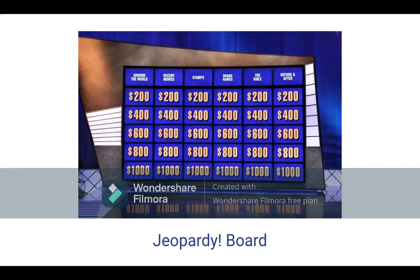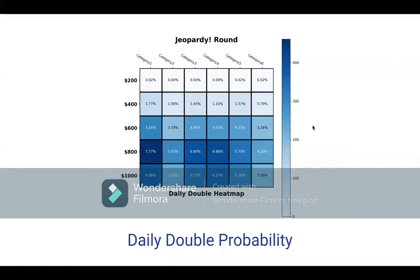These are the probabilities of a daily double on the board layout we saw before. On this board, you would find a daily double most likely in the bottom left corner at the $800 mark. A daily double — if you watch the show you're familiar with it — is a clue on which you will not get the money that the clue is worth. If you get it right, you will get however much you bet. If you get it wrong, you will lose however much you bet on it.